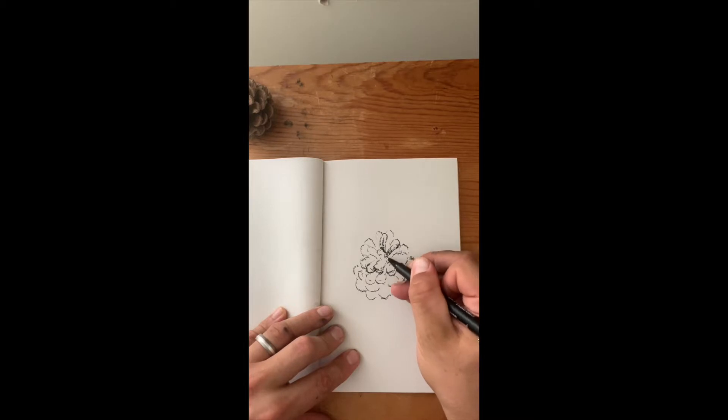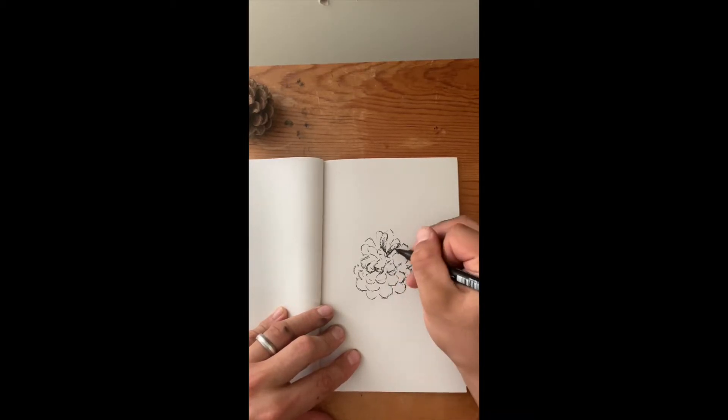And then the curve goes this way too. And so, because we're following that curve with our value, we can start to feel how that object is round and not just a flat piece.